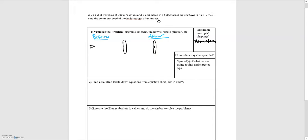In this video we'll be going over another momentum problem where we have a bullet striking a target. The bullet has a mass of 5 grams, traveling at 300 meters per second. It embeds — and this is a key word — into a 500 gram target that is moving towards the bullet at 5 meters per second. We have the bullet moving to the right and the target moving to the left, and we're looking for the speed of the bullet and target after the impact.